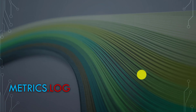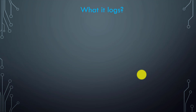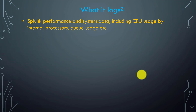So what is matrix.log and what does it basically log? Matrix.log logs Splunk performance level details like system data and the CPU usage of internal processors. If you remember, we talked about processors in detail — in Splunk everything is a pipeline, and an indexing pipeline is a combination of different processors and queues. So the CPU usage by those processors, the system data, and the queue usage — everything gets logged into matrix.log.